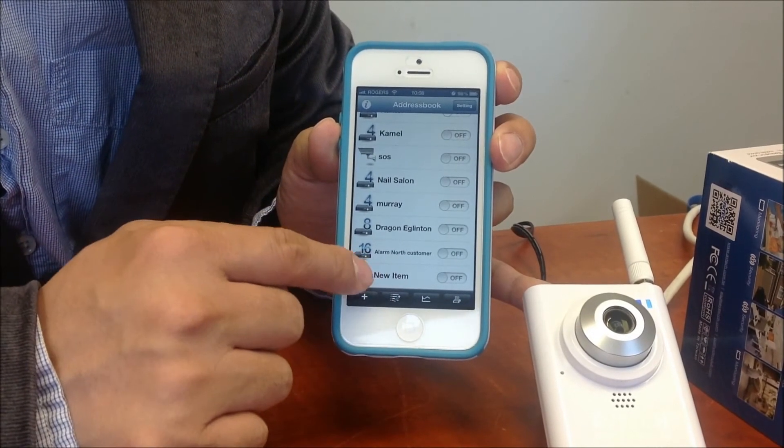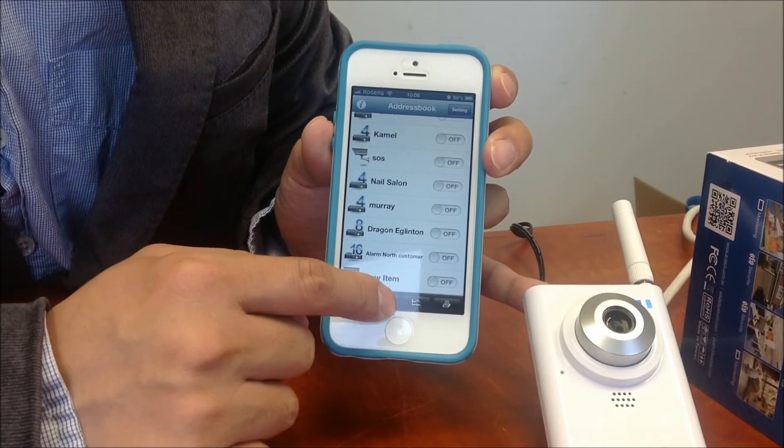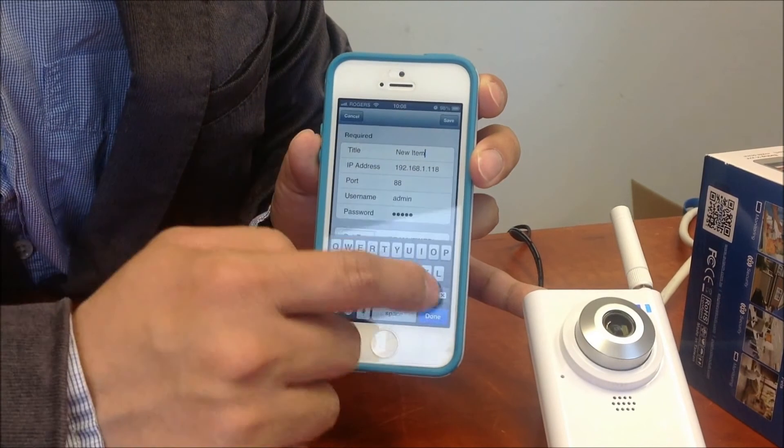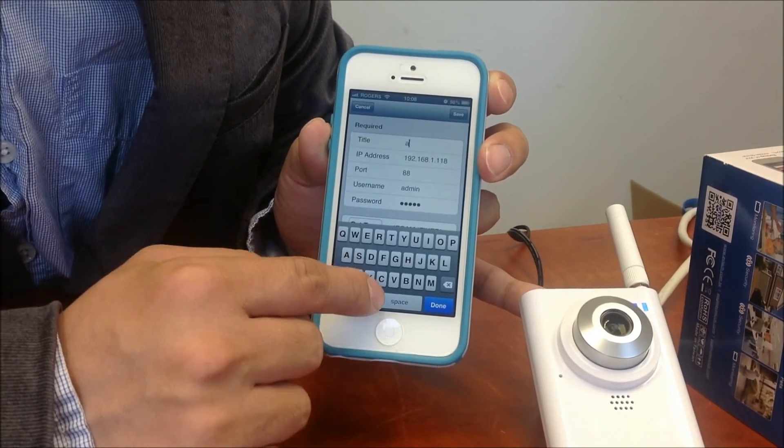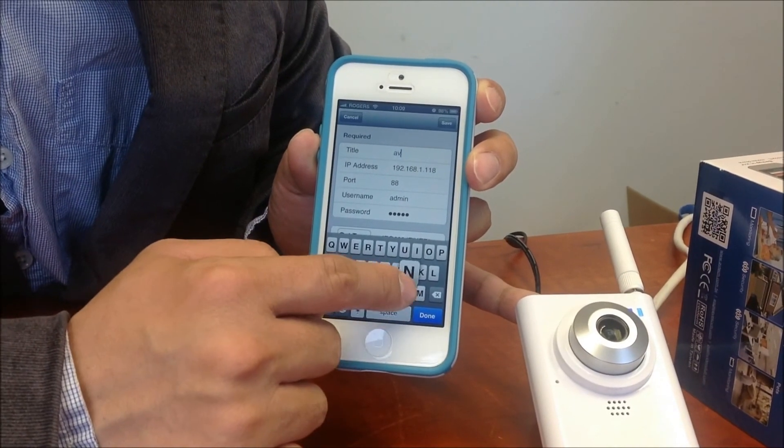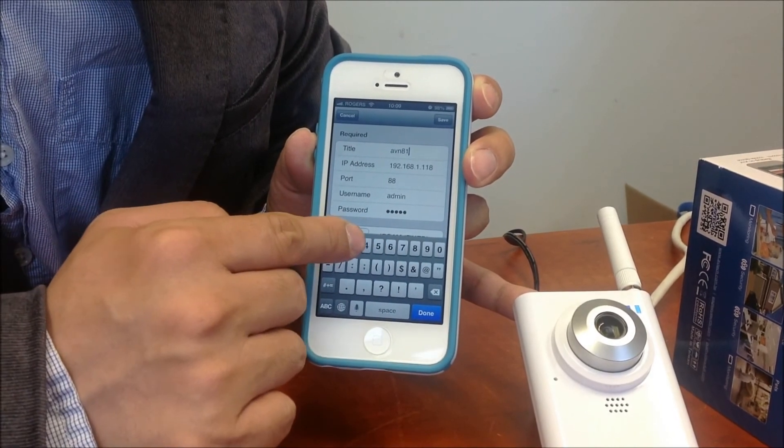So the last one is our new IP, you can give a different name. Okay, by clicking save, we can give a new name, AVN813.